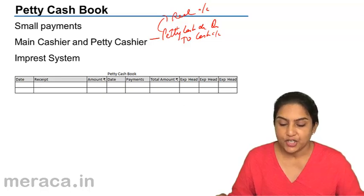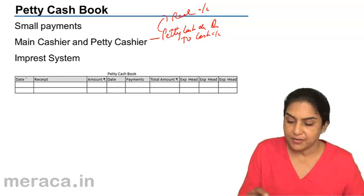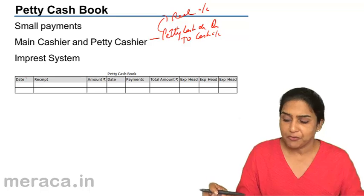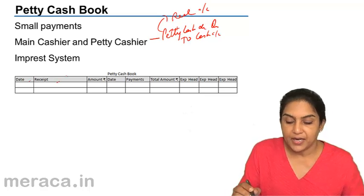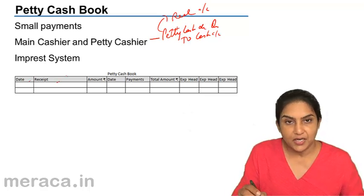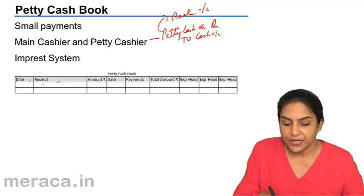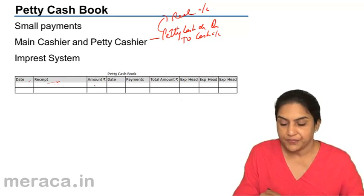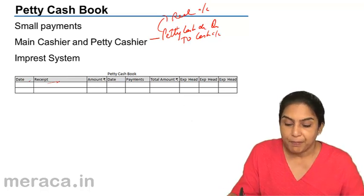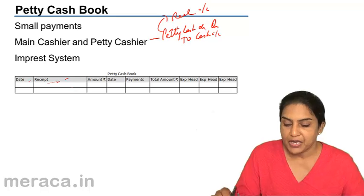How is this petty cash book maintained? It has a format of its own with different columns for the different items of expense. There is a date column, the receipt — which date it was received — if there is any receipt, any check, etc. Such details are noted here and the amount of receipt. On the other side you have the payment. This is the receipt side, and the receipt comes from the main cashier.